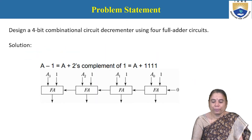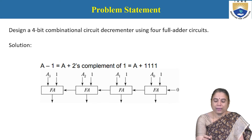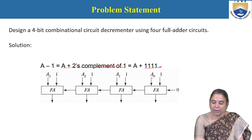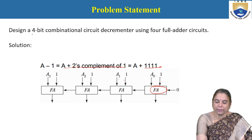The next problem: design a 4-bit combinational circuit decrementer using 4 full adder circuits. A minus 1 is calculated as A plus the 2's complement of 1, which equals A plus 1111 (four ones). Each bit of A is added with 1 using the respective full adder. This is the circuit diagram of the 4-bit decrementer.